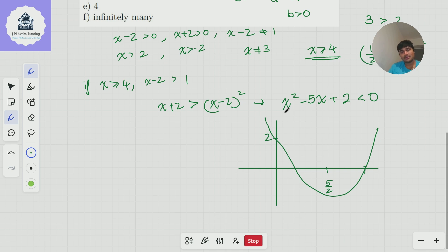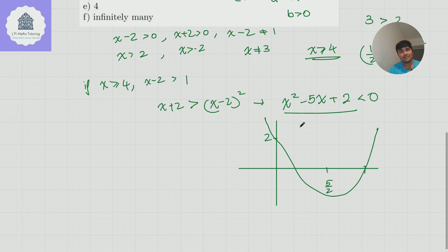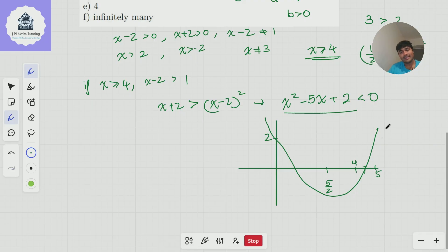Well, if I substitute x equals 4 into this, 4 squared minus 20 plus 2, that's a negative number. But if I substitute x is 5 into this, 5 squared minus 25 plus 2, that's positive 2. And so therefore, this root here must be between 4 and 5.